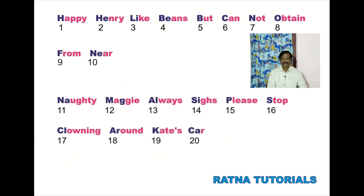Now I am giving you one acronym to remember all these elements in the order: Happy Henry like beans but cannot obtain from near. Happy — the first letter H denotes hydrogen. Henry — the first two letters HE denotes helium. And like LI, lithium. Beans BE, that is beryllium. Then the word but, the first letter B denotes boron, and then carbon, nitrogen like that.